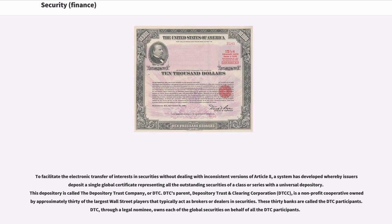To facilitate the electronic transfer of interest in securities without dealing with inconsistent versions of Article 8, a system has developed whereby issuers deposit a single global certificate representing all the outstanding securities of a class or series with a universal depository. This depository is called the Depository Trust Company, or DTC. DTC's parent, Depository Trust and Clearing Corporation, is a non-profit cooperative owned by approximately 30 of the largest Wall Street players that typically act as brokers or dealers in securities. These 30 banks are called the DTC participants. DTC, through a legal nominee, owns each of the global securities on behalf of all the DTC participants.